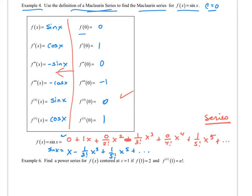To create a general term, the signs are alternating, so I use negative one to the n minus one. The exponent is always odd, represented as 2n minus one, and the denominator is 2n minus one factorial. This is valid starting with n equal to one.